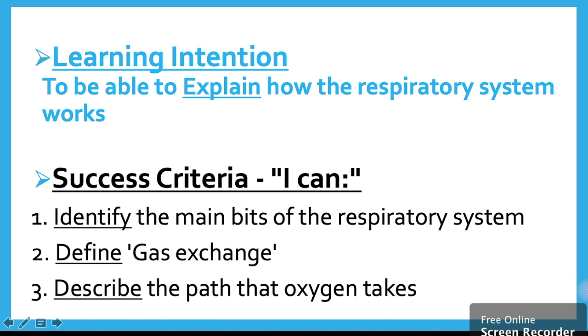We're going to do this with our success criteria. Number one, identify the main bits of the respiratory system. Number two, define gas exchange. And number three, describe the path that oxygen takes.